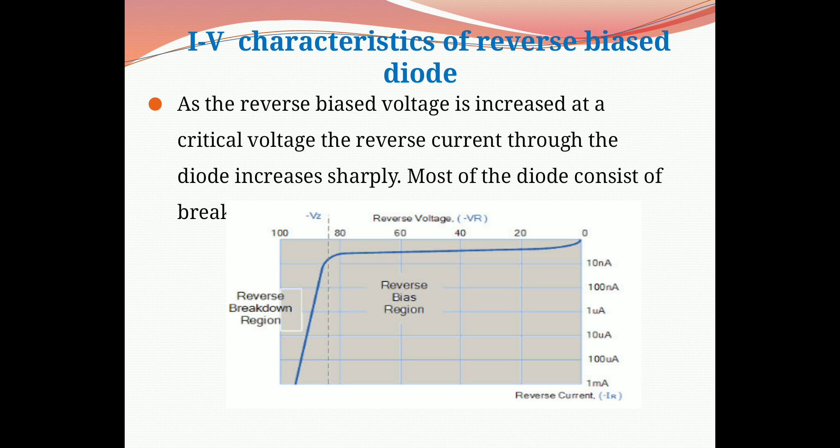The positive terminal of the battery pushes the holes towards the P-type semiconductor, and the negative terminal pushes electrons towards the N-type semiconductor. The minority charge carriers that cross the PN junction are attracted towards the terminals of the battery, and thus the minority charge carriers carry the electric current in reverse bias PN junction diode. The electric current carried by the minority charge carriers is very small and hence is considered negligible.